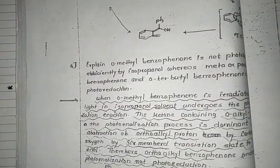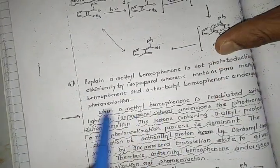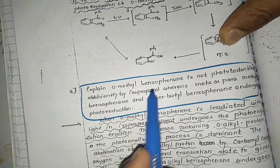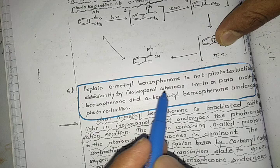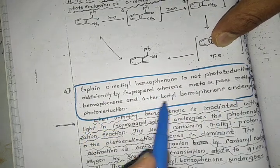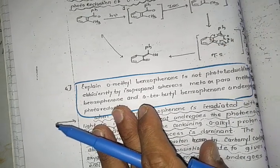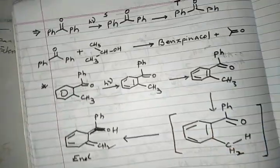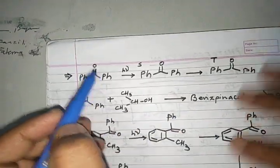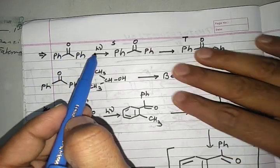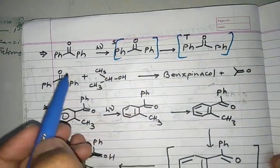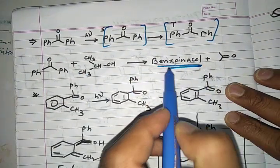There are many types of exam questions on this topic. One common question asks: explain why ortho-methyl benzophenone is not efficiently photo-reduced by isopropanol, whereas meta- or para-methyl benzophenone and ortho-tertiary butyl benzophenone undergo photo reduction. For reference, benzophenone irradiated with light forms a singlet state, then a triplet state, and undergoes photo reduction to give benzophenacol.